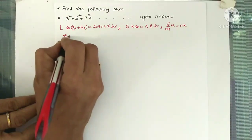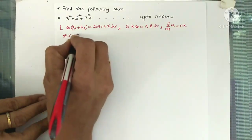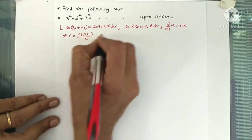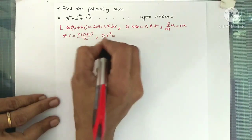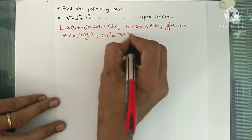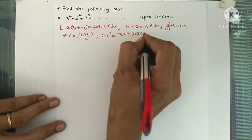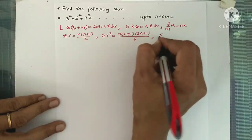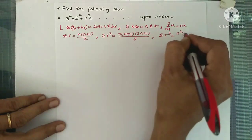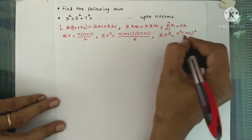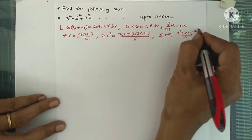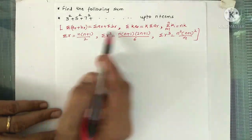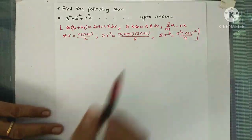We also have three formulas. Summation r, from r=1 to n, equals n(n+1)/2. Summation r square equals n(n+1)(2n+1)/6. And summation r cube equals n²(n+1)²/4. Whenever we solve such questions, we use these properties and formulas.